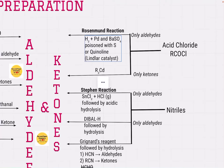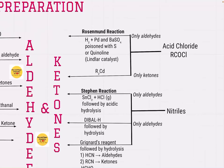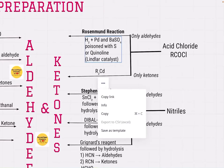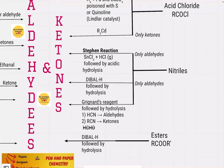In the Rosenmund reaction, the palladium catalyst is poisoned with sulfur or quinoline — that is the Lindlar catalyst — a reducing agent with its own reducing capacity reduced by poisoning so that it doesn't act as a strong reducing agent. Ketones, on the other hand, can be prepared from acid chlorides by treatment with dialkyl cadmium.